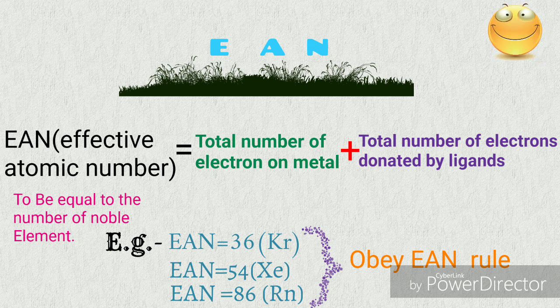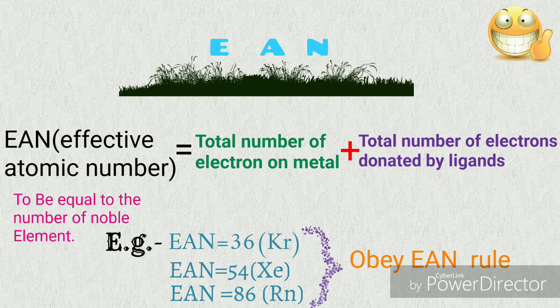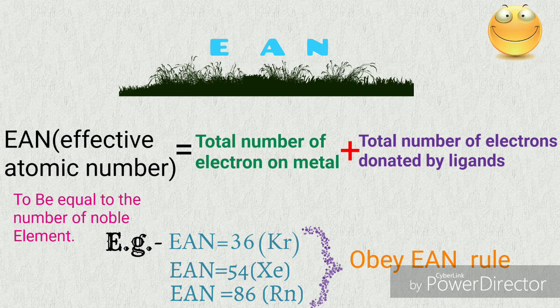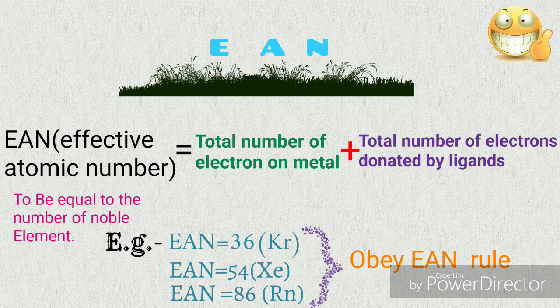For example, EAN equals 36, that is the total number of electrons of krypton; EAN is 54 for xenon; EAN 86 for radon, and so on. Hope you understand EAN rule. If not, leave a comment below.